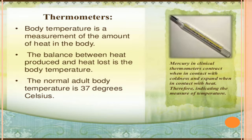Now, a mercury thermometer — in mercury clinical thermometers, mercury contracts when in contact with coldness and expands when in contact with heat, and that is how it measures temperature. Body temperature is a measurement of the amount of heat in the body. The balance between heat produced and heat lost is the body temperature. The normal adult body temperature is 37 degrees Celsius. It is TRUE that we use a thermometer to check if we have a fever.